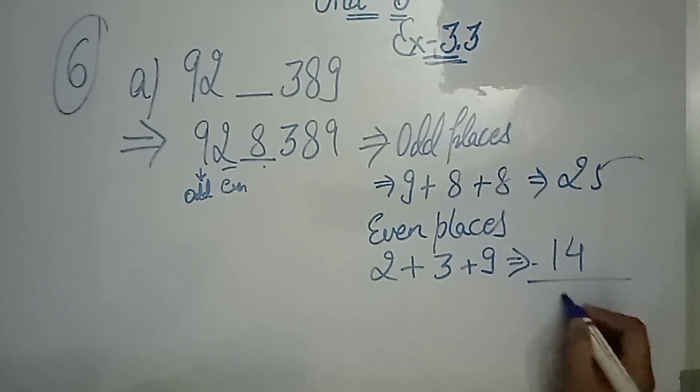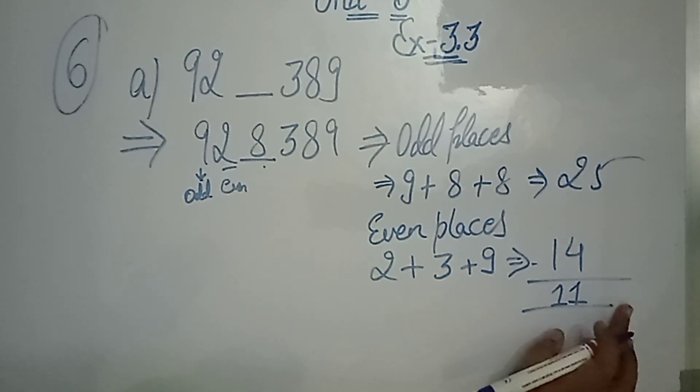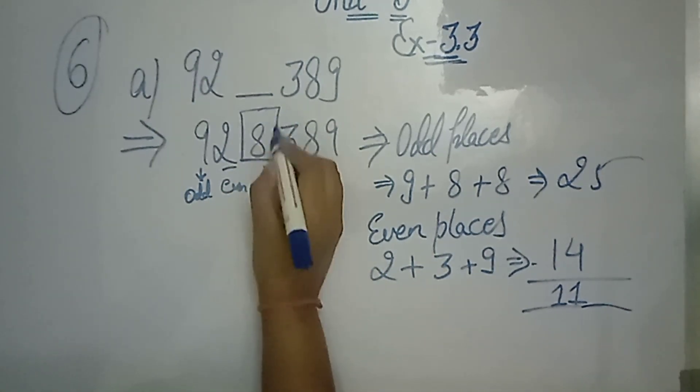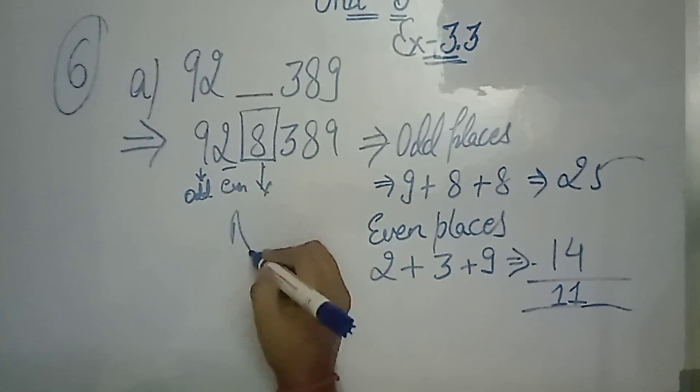If you do the difference between them, then how much will it be? 11. So what will it be? 11 is divisible by 11. So what will it be? 8. 8 is the answer.